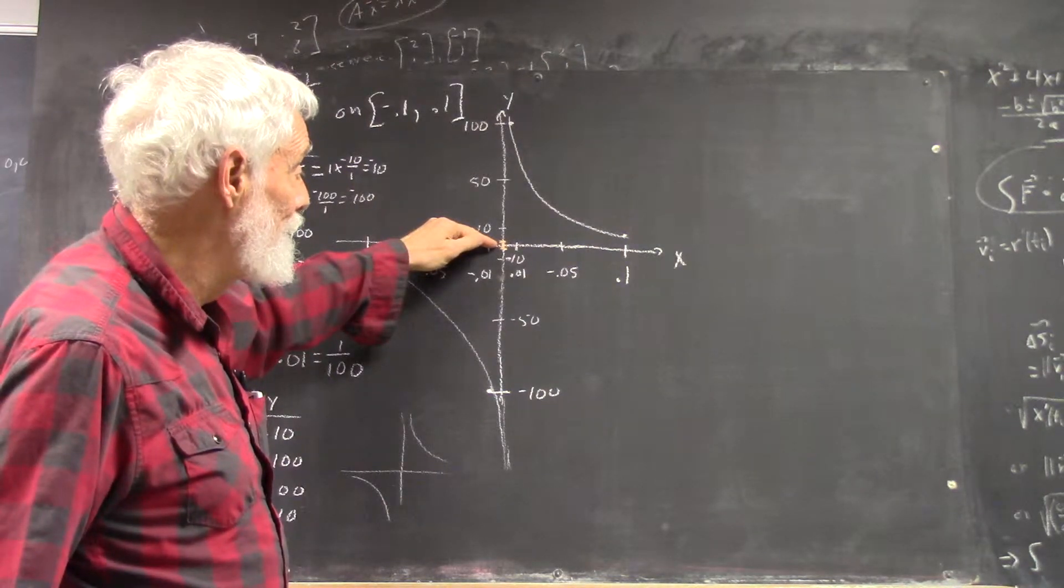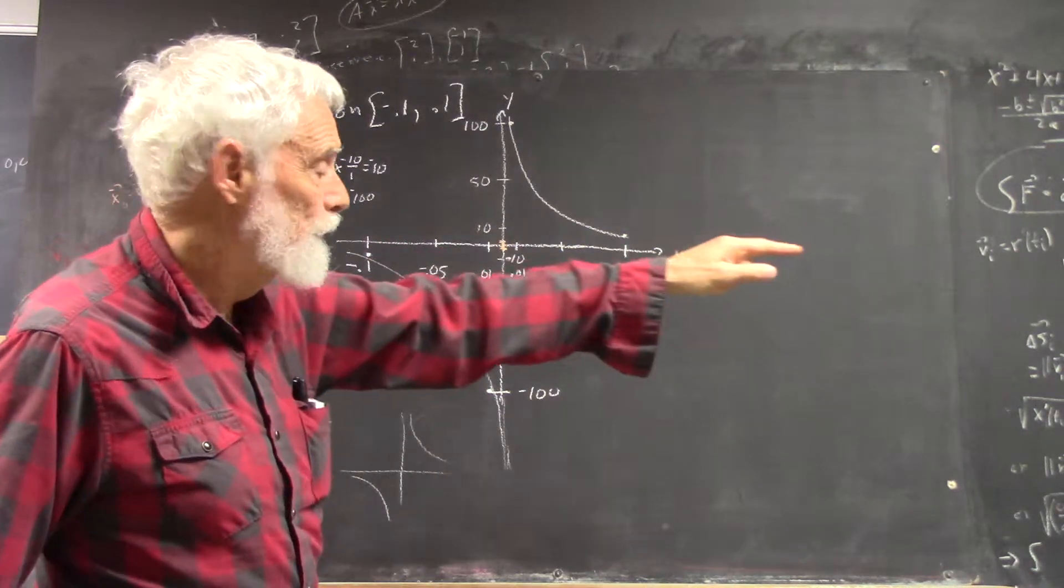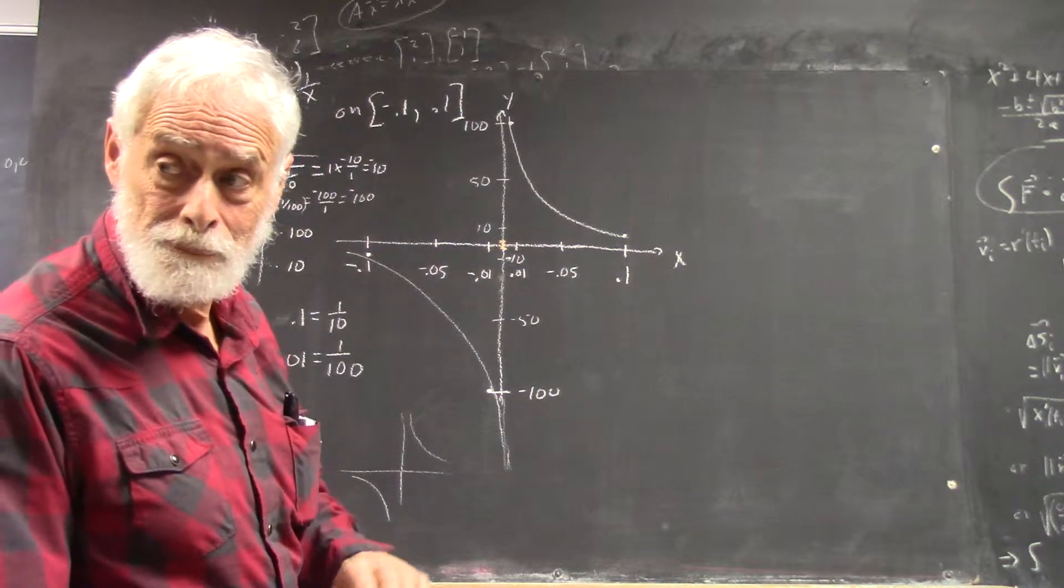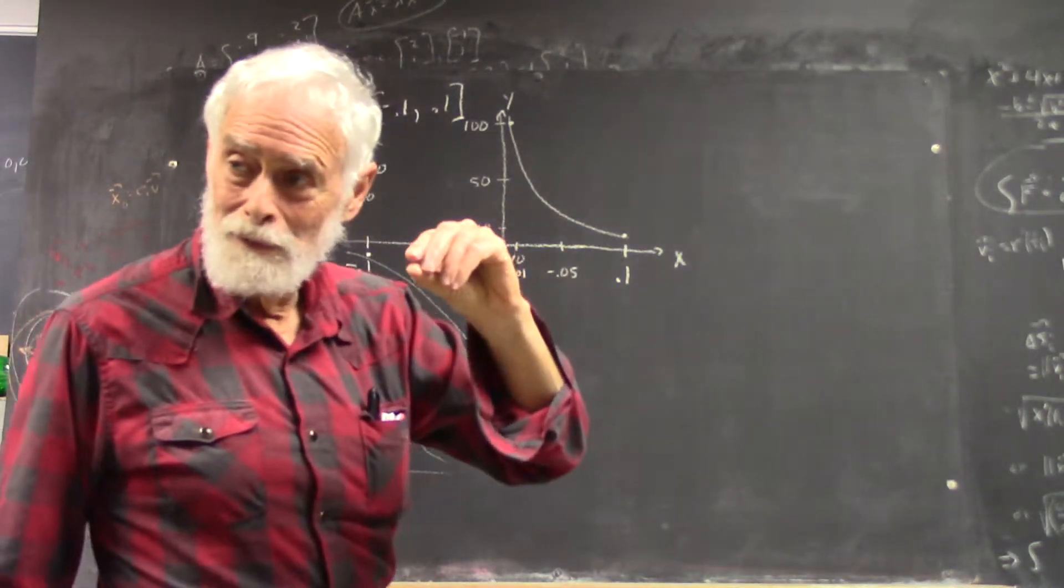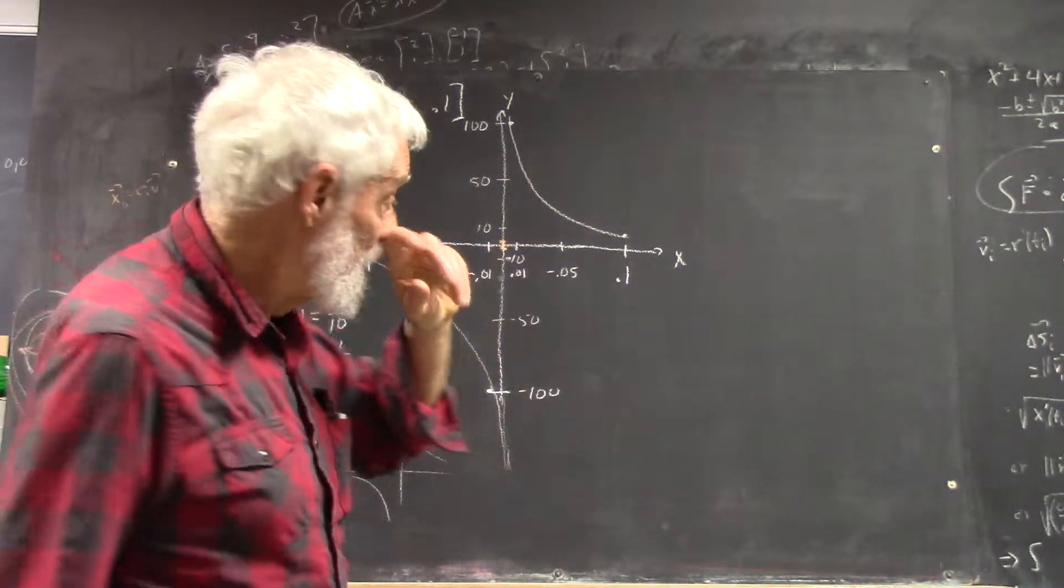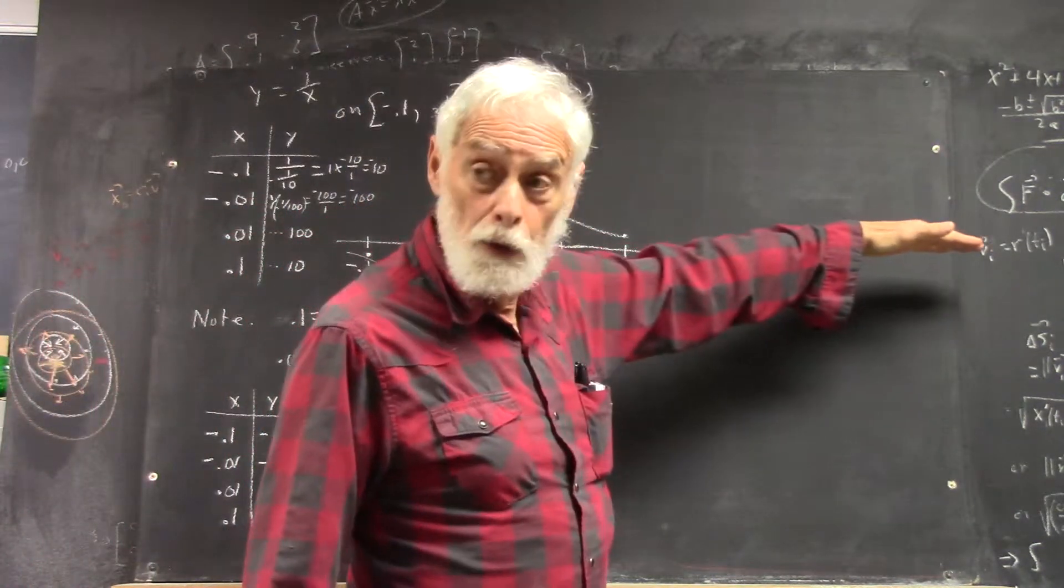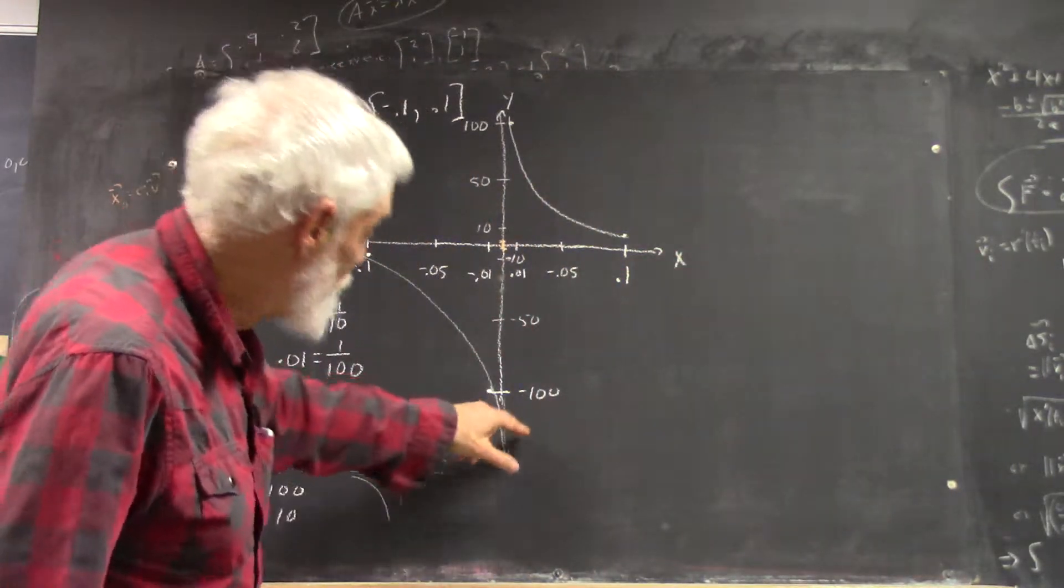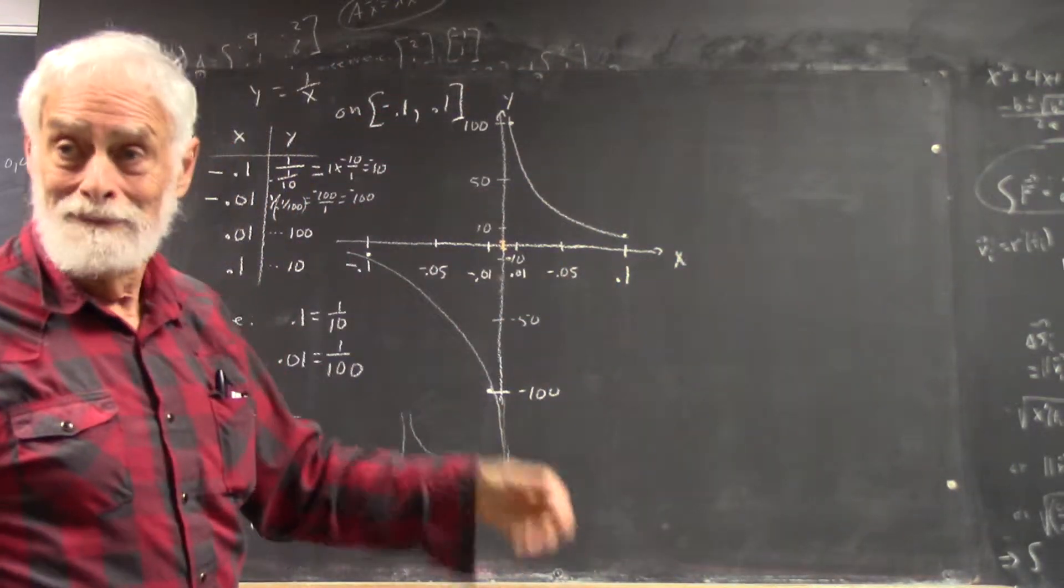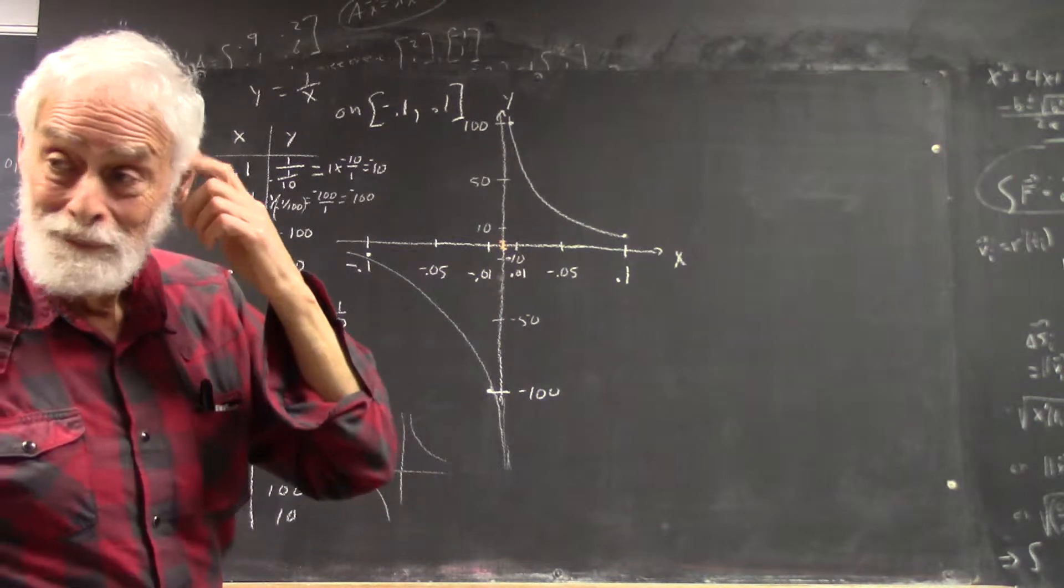Which means that the graph is going to get really close to the x-axis. Because you're using a scale from negative 100 to 100, 1 isn't much.